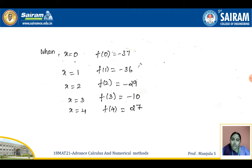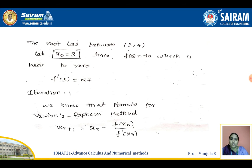Now we need to find which interval contains the root. We substitute values x = 0, 1, 2, 3, and so on into f(x). Somewhere we will get one negative and one positive value — there we stop. f(0) = -37, f(1) = -36, and up to f(3) we get negative values only, whereas f(4) = 27. Since f(3) is nearer to 0, we take x₀ = 3. f'(x₀) = f'(3) = 27.